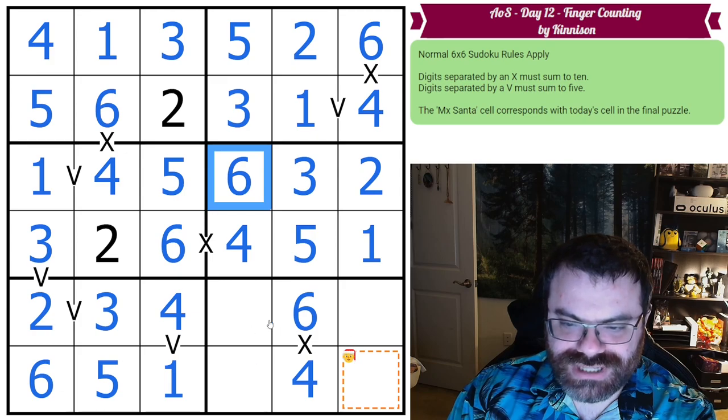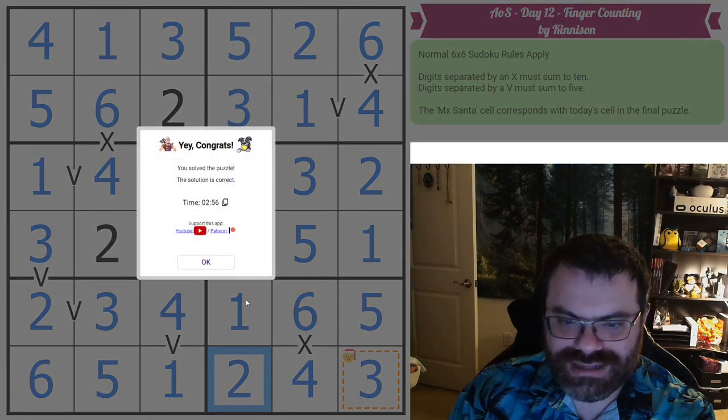And then up here, I do need a one and a five. And then down here, I need a two and a three. And there we go. We are done.